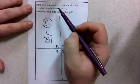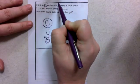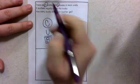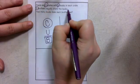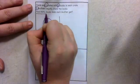So as we read, we will circle our numbers. There are four crates with six books in each crate. Three brothers equally share the books. How many books does each brother get? There is my question sentence.